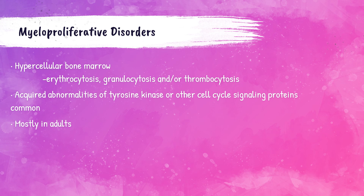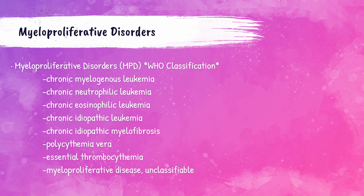Myeloproliferative disorders (MPD), also known as myeloproliferative neoplasms (MPN), are when the bone marrow is hypercellular — meaning there is an abundance of a certain cell type, such as erythrocytosis, granulocytosis, and/or thrombocytosis. The WHO classifies MPDs/MPNs as chronic myelogenous leukemia, chronic neutrophilic leukemia, chronic eosinophilic leukemia, chronic idiopathic myelofibrosis, polycythemia vera, essential thrombocythemia, and unclassifiable myeloproliferative diseases.